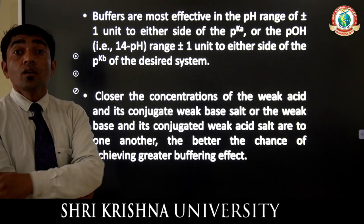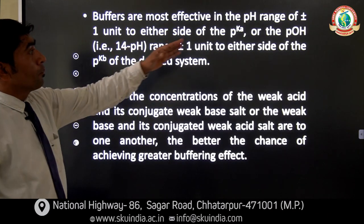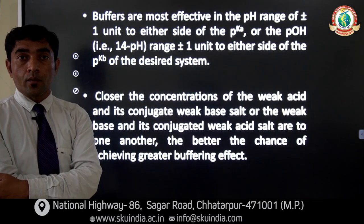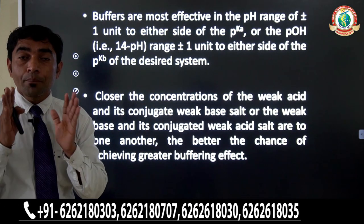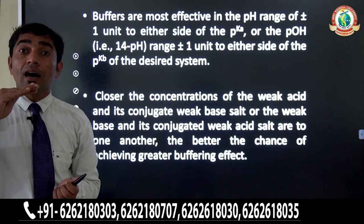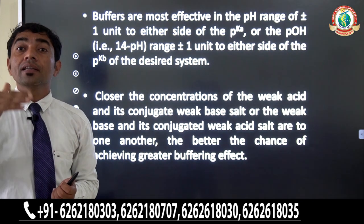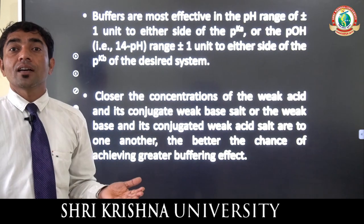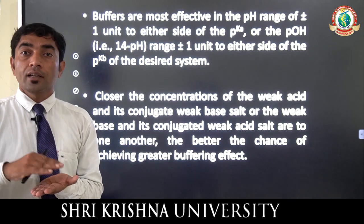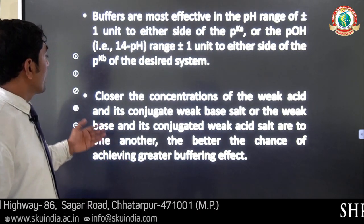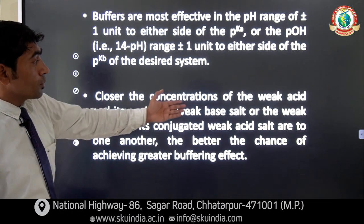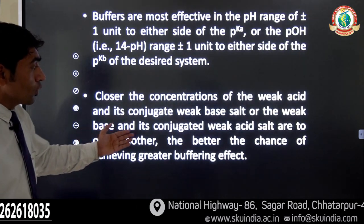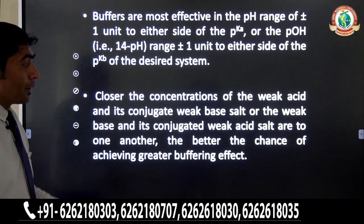Buffers are most effective in the pH range of plus or minus 1 unit on either side of the pKa. The acid's pKa determines the range — up to pKa ±1 — within which the buffer has good capacity to maintain its pH. The closer the concentration of the weak acid and its conjugate base salt are to each other, the better the chance of achieving a greater buffering effect.